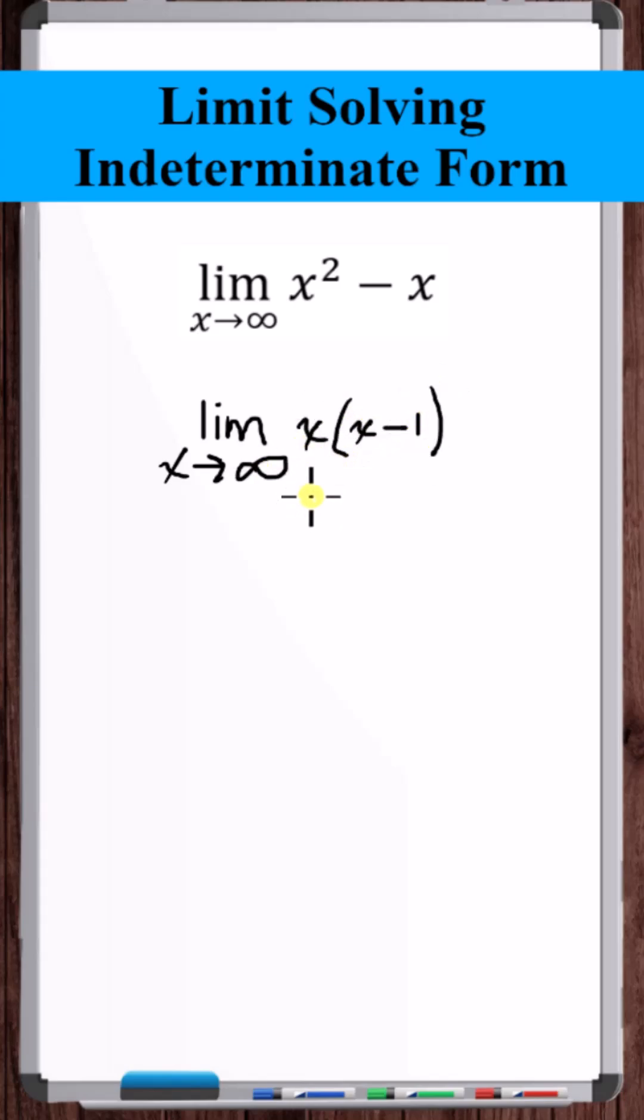Now let's plug in infinity. x goes to infinity, x minus 1 goes to infinity. Now infinity times infinity is a determinate form because an enormous number times an enormous number just gives another enormous number. So this limit is equal to infinity.